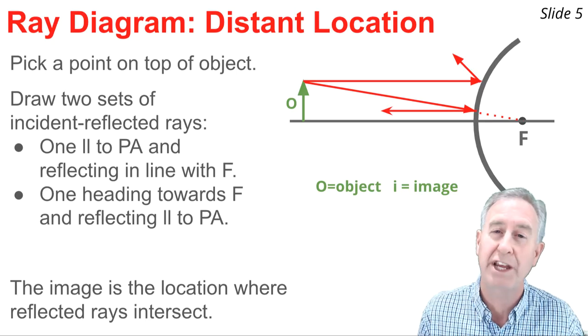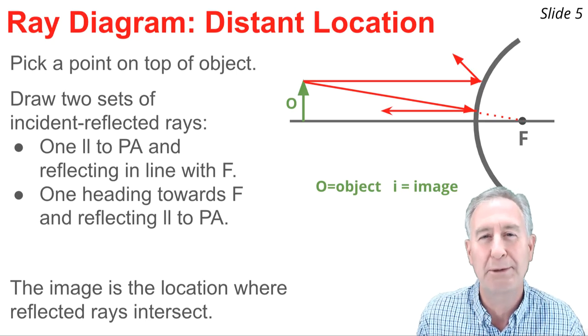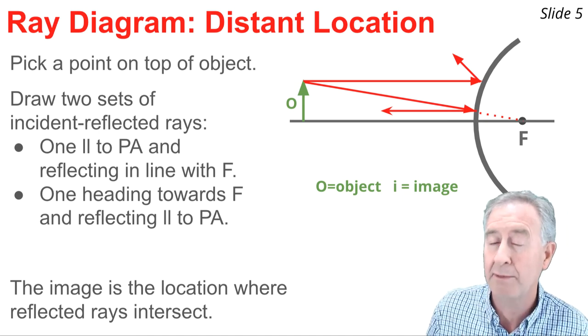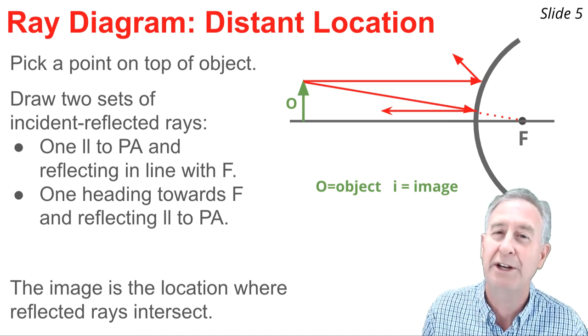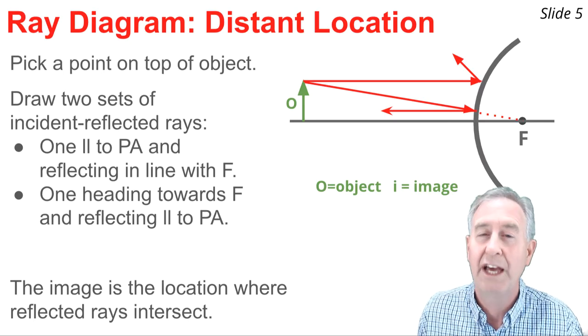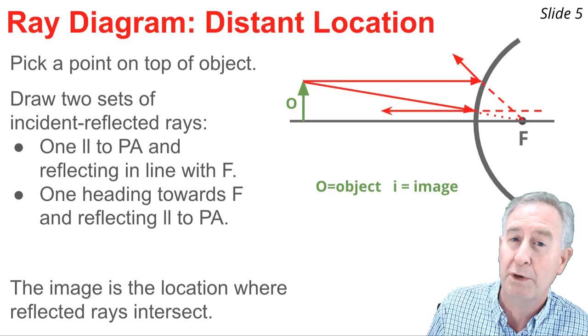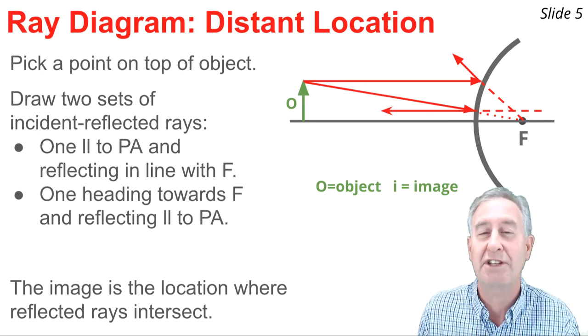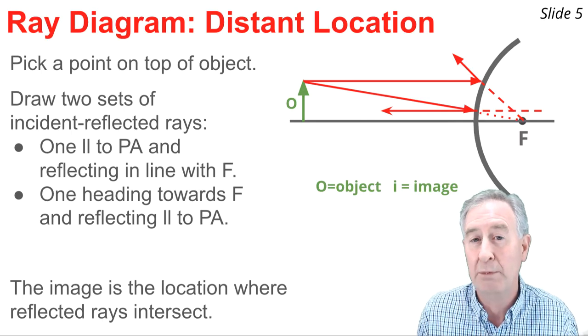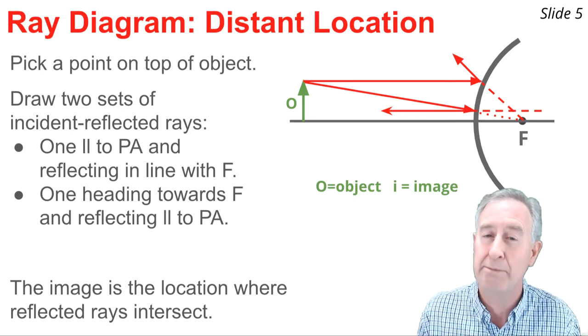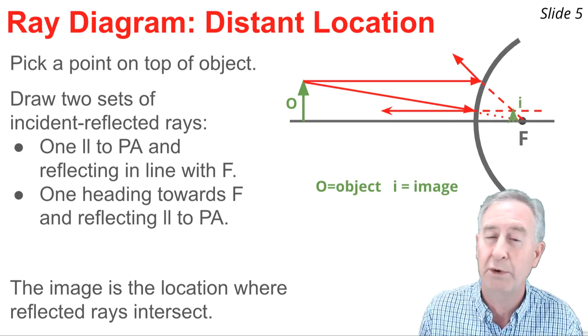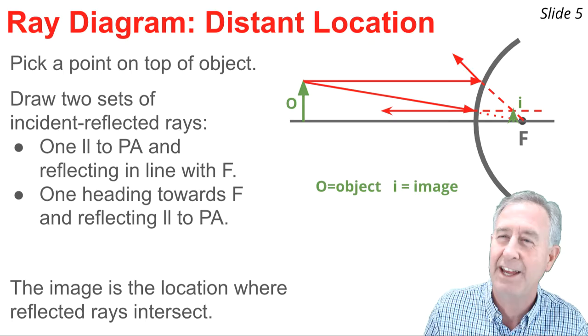It reaches the mirror first and reflects parallel to the principal axis. Now these two reflected rays are diverging, which tells me that this image must be a virtual image located on the opposite side of the mirror. To determine its location, I extend the reflected rays backwards to an intersection point. The intersection point is the image of the top of the object. Now the object is standing on the principal axis and stretching upwards above it, so the image must also stand on the principal axis and stretch upwards to this intersection point, as shown.